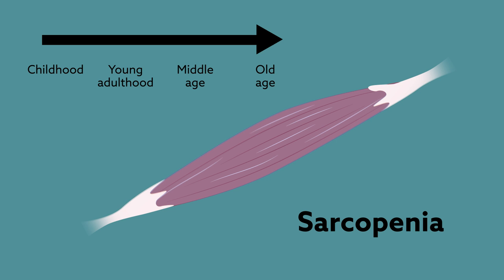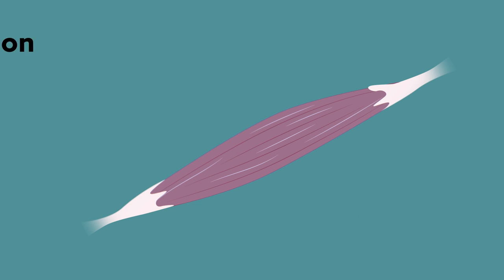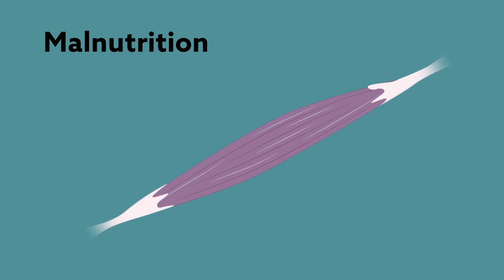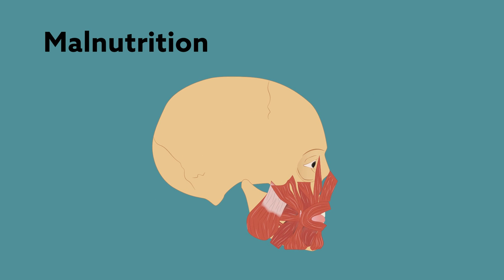While this muscle loss is a natural part of the aging process, malnutrition has been suggested to amplify the problem. And because nutritional intake involves oral function, degeneration of these muscles may play a role.